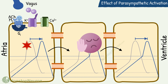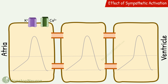Very strong stimulation by the vagus nerve can even completely block the conduction from the AV node. This is how the parasympathetic nervous system slows down impulse conduction in the AV node. Now let's see the effect of sympathetic stimulation.